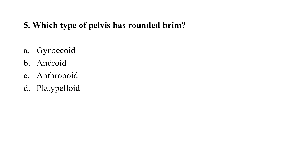Question number 5: Which type of pelvis has a rounded brim — option A: gynecoid; option B: android; option C: anthropoid; option D: platypelloid. The correct option is A, that is gynecoid.